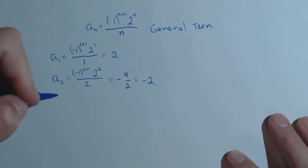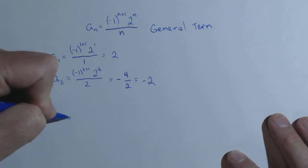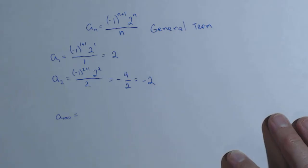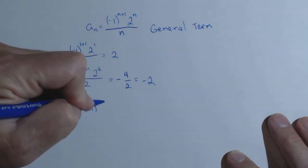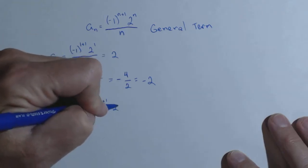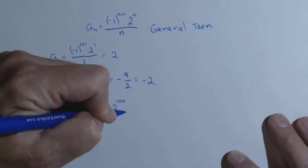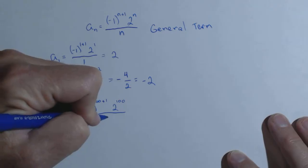So if we did the third term, it would be positive. Now again, we can find any term in this sequence. Let's say we want the hundredth term, then we're looking for a sub 100. So we have (-1)^(100+1) times 2^100 over 100.